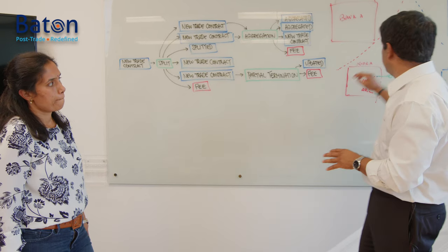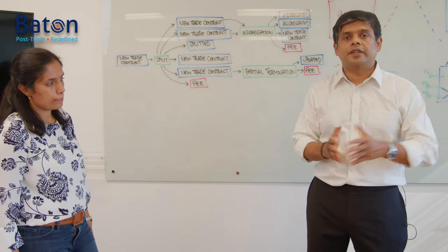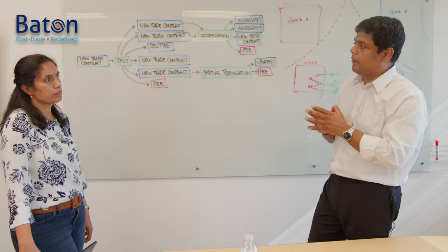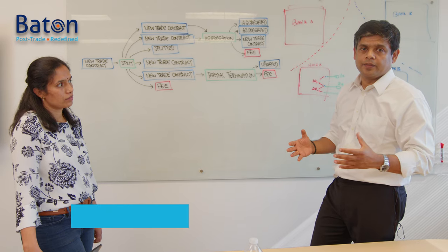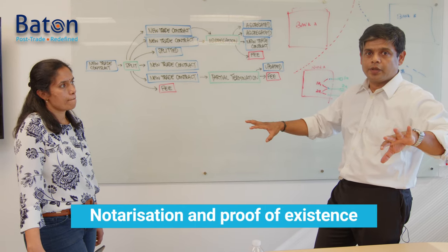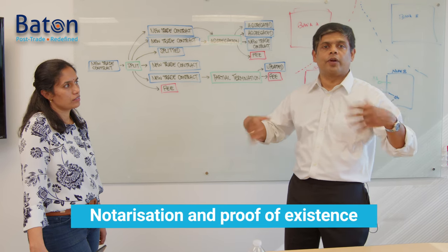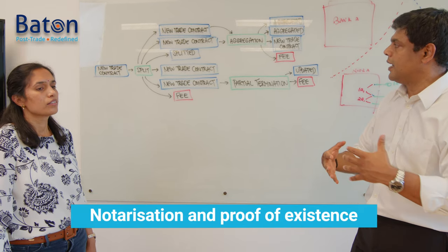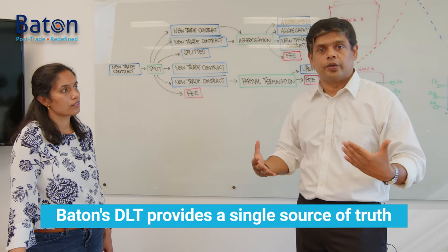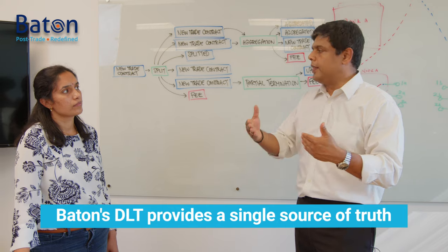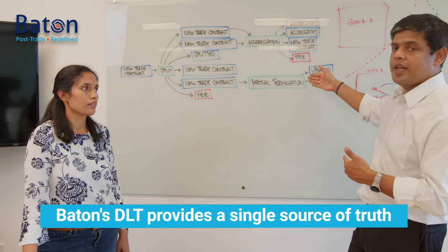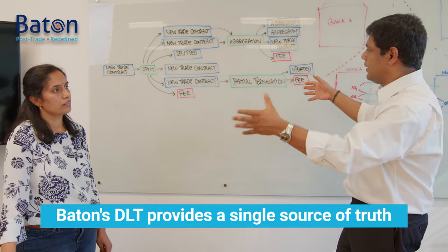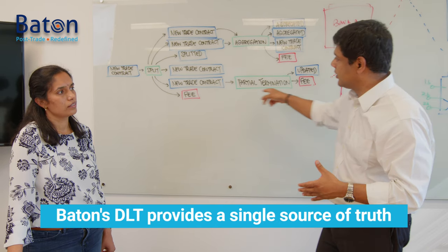An important aspect of lineage is that in a centralized model, one entity stores the data — straightforward. In a distributed model, there is no single place where data lives, which meant we had to implement what is called a notarized service — storing data in multiple places. To determine which data is correct, we use what in the blockchain world is called proof of existence. BATON implements proof of existence to ensure a single source of truth. We can cryptographically prove that both parties agreed to a certain contract at a certain stage, using public and private keys, demonstrating that a terminal state was reached.